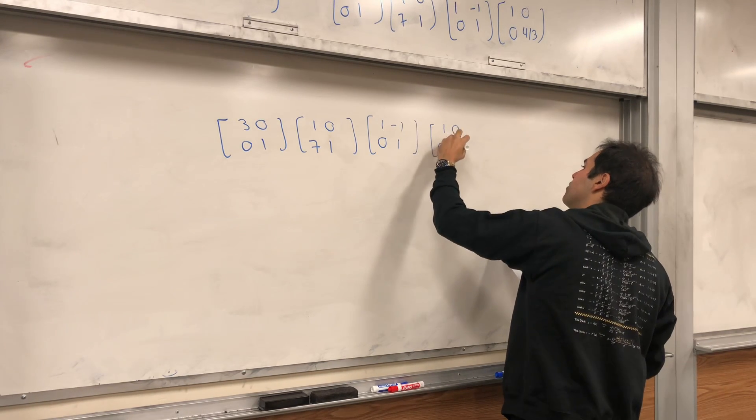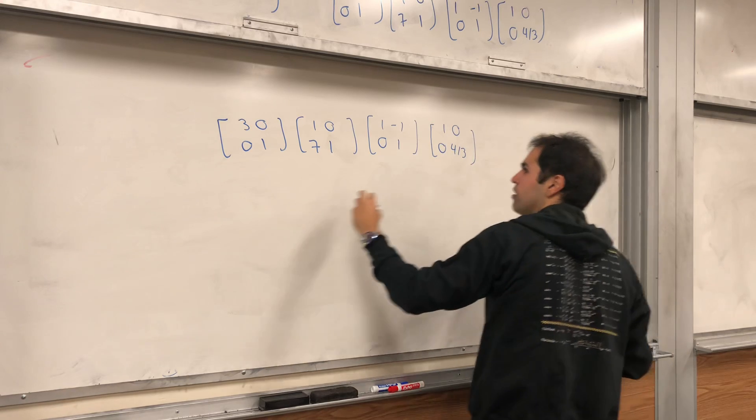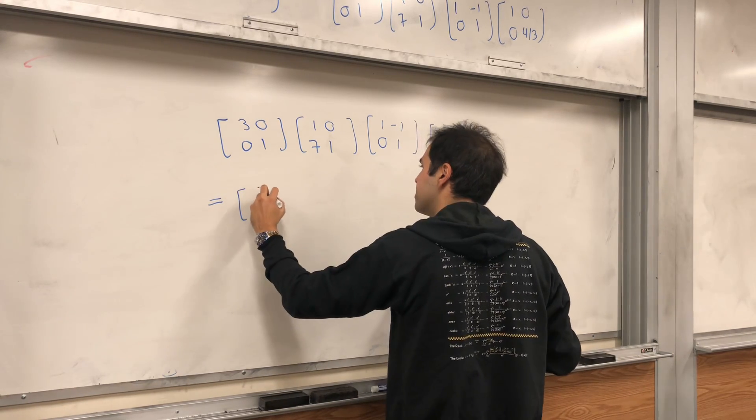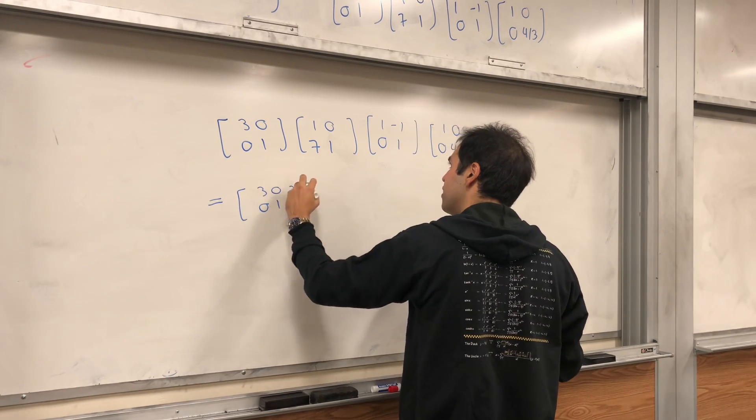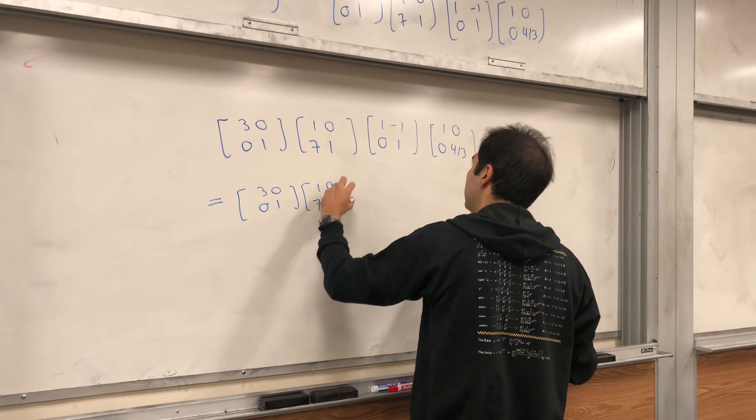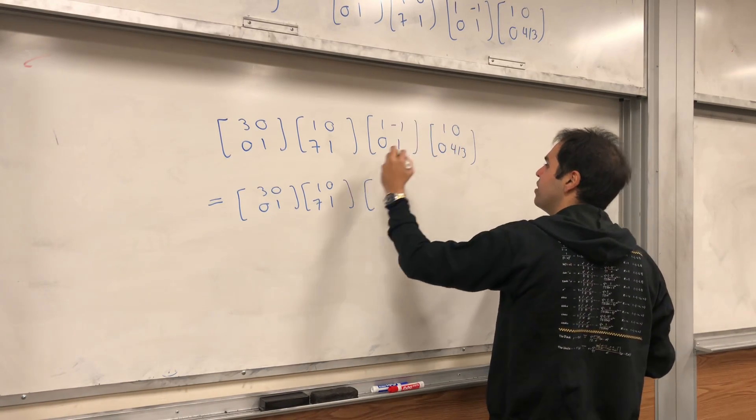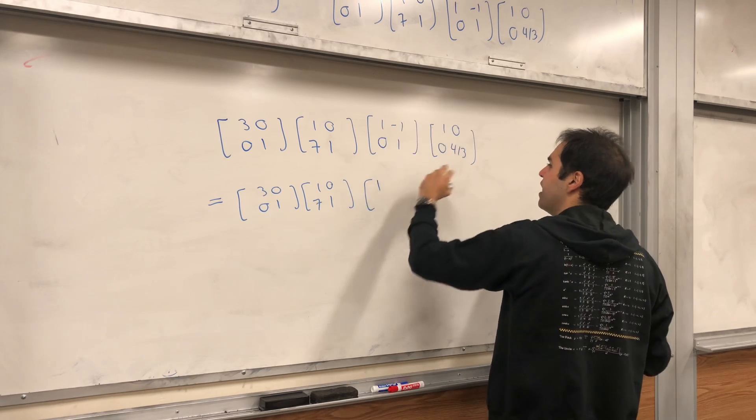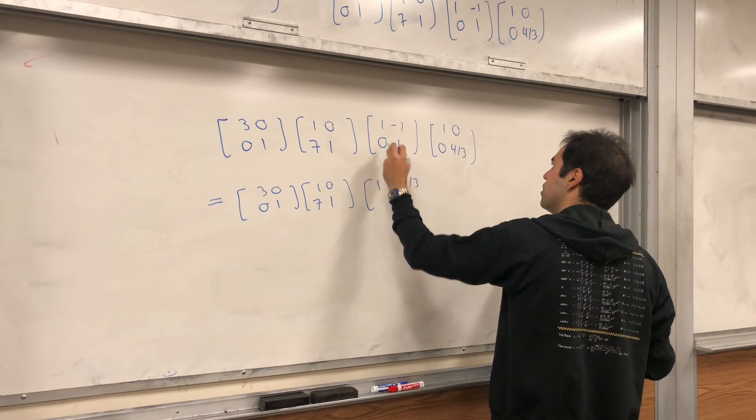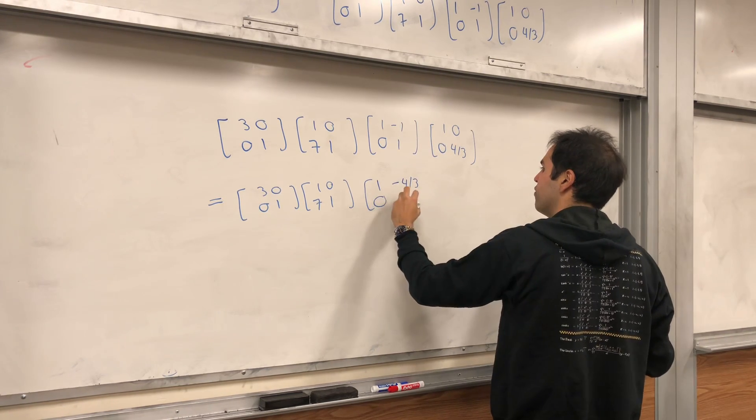And, 1, 0, 0, 4 thirds. Okay, so, it's 3, 0, 0, 1. 1, 0, 7, 1. Okay, 1 times 1, which is 1. So, 1. And then, minus 4 thirds. And then, 0. And then, 0. And then, 4 thirds.